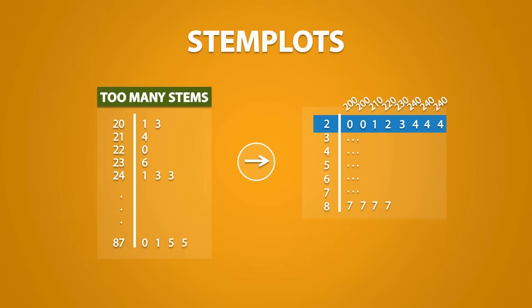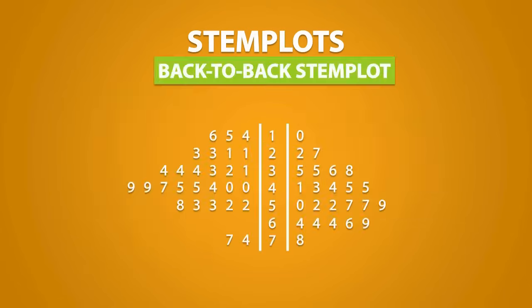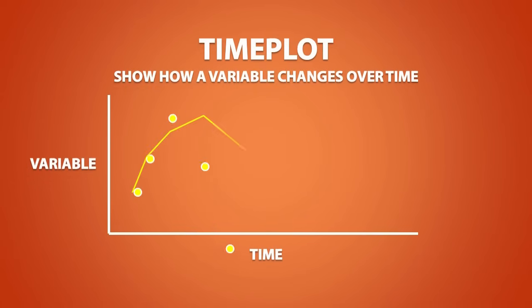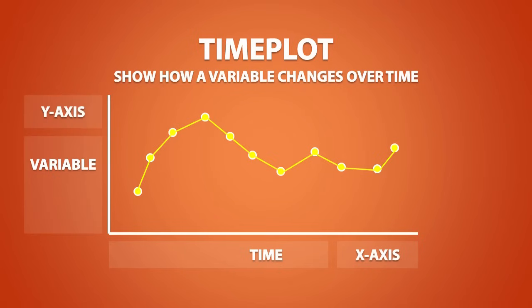Now the last type of stem plot we will be looking at is called a back-to-back stem plot. Back-to-back stem plots are used to display and compare two distributions by using the same set of stems. So for example, we could compare data from males and females, or data from cats and dogs. Another way to display quantitative data is by using a time plot. Time plots show how a variable changes over time. By convention, time is always plotted on the x-axis, and the values of a variable are always plotted on the y-axis.